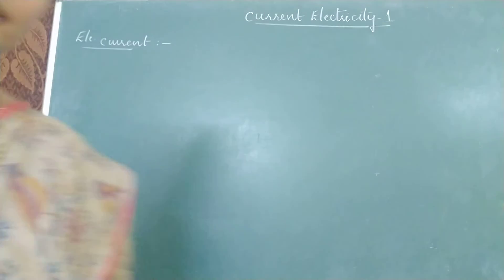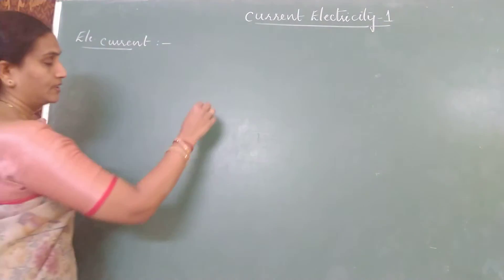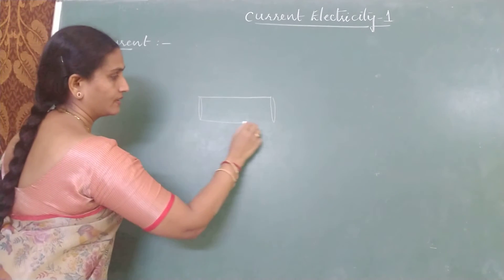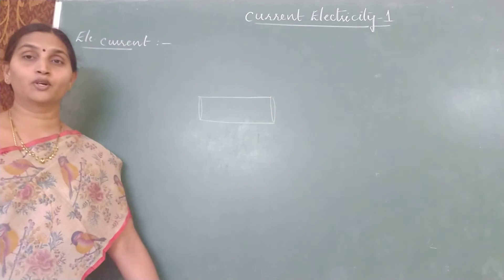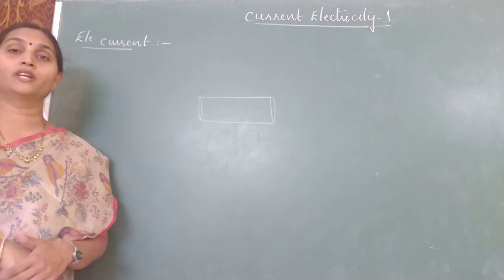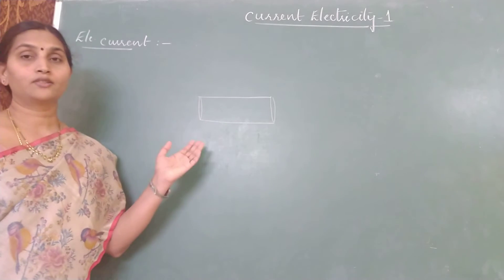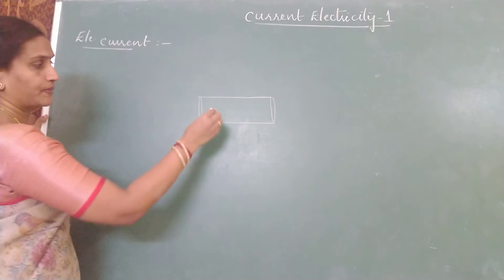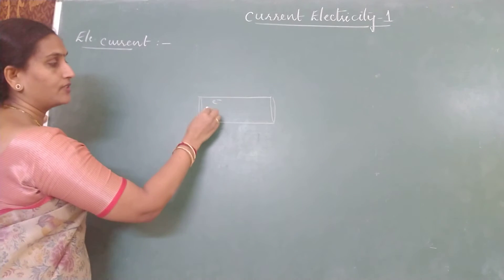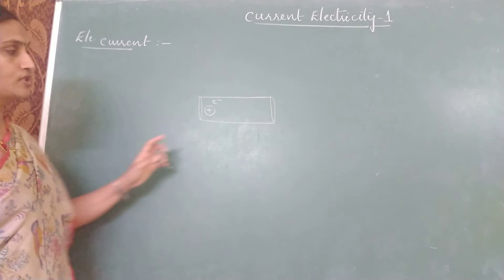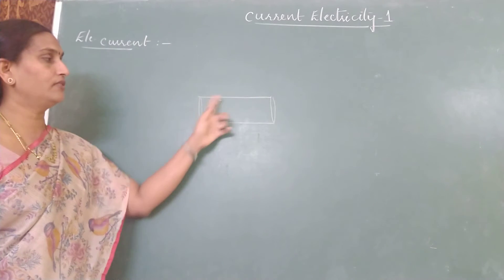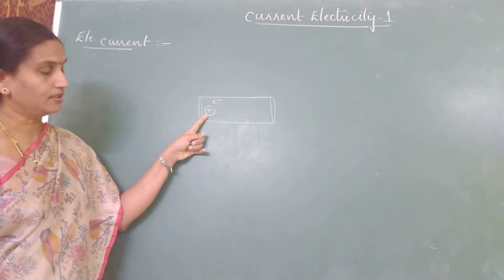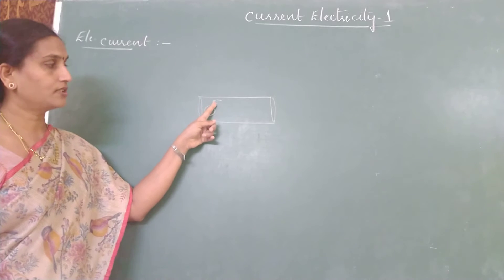To understand electric current, let us go back to a conductor. A conductor is a substance which has a large number of free electrons — electrons which have come out of the nuclear forces of attraction. If you take this as a conductor, it has a number of free electrons. Every free electron is associated with a positively charged ion; after giving the electron, the atom becomes a positively charged ion.